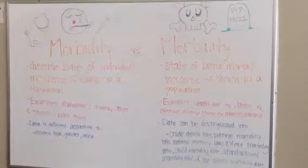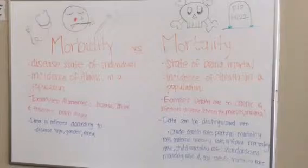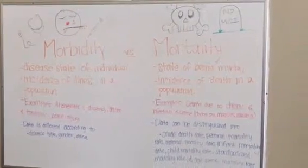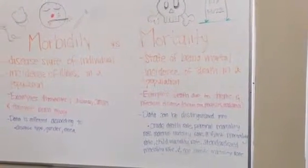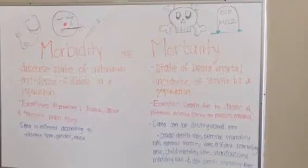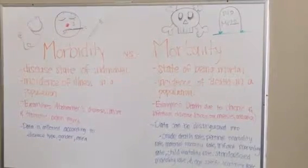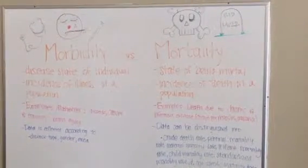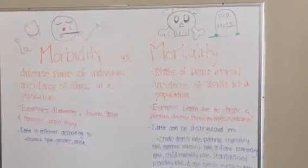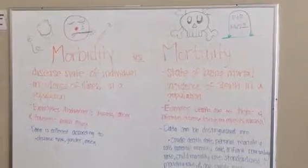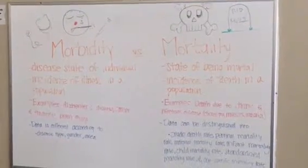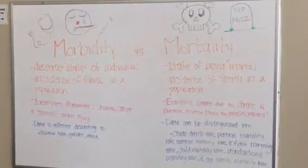Mortality, on the other hand, is the state of being mortal. It's the incidence of death in a population. Examples include death due to chronic and infectious disease, such as chickenpox, measles, or malaria.